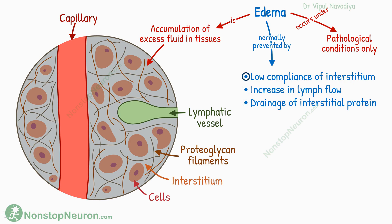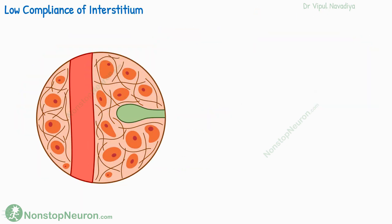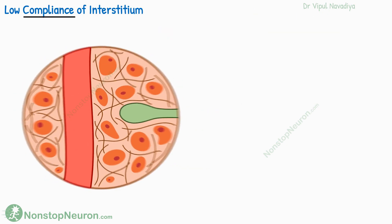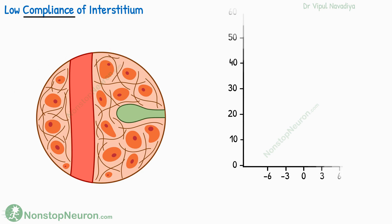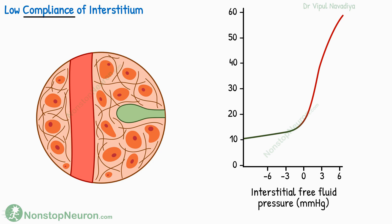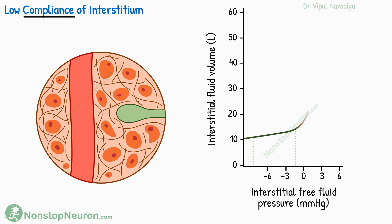First, the role of low compliance of the interstitium. Compliance, in simple words, is the expandability of the tissue. The compliance profile of tissue in our body is shown in this graph, with interstitial free fluid pressure on the x-axis and interstitial fluid volume on the y-axis. The slope of the curve is indicative of compliance. Normally, the interstitial fluid hydrostatic pressure is about minus 3 mmHg. Near this range, the compliance is low.